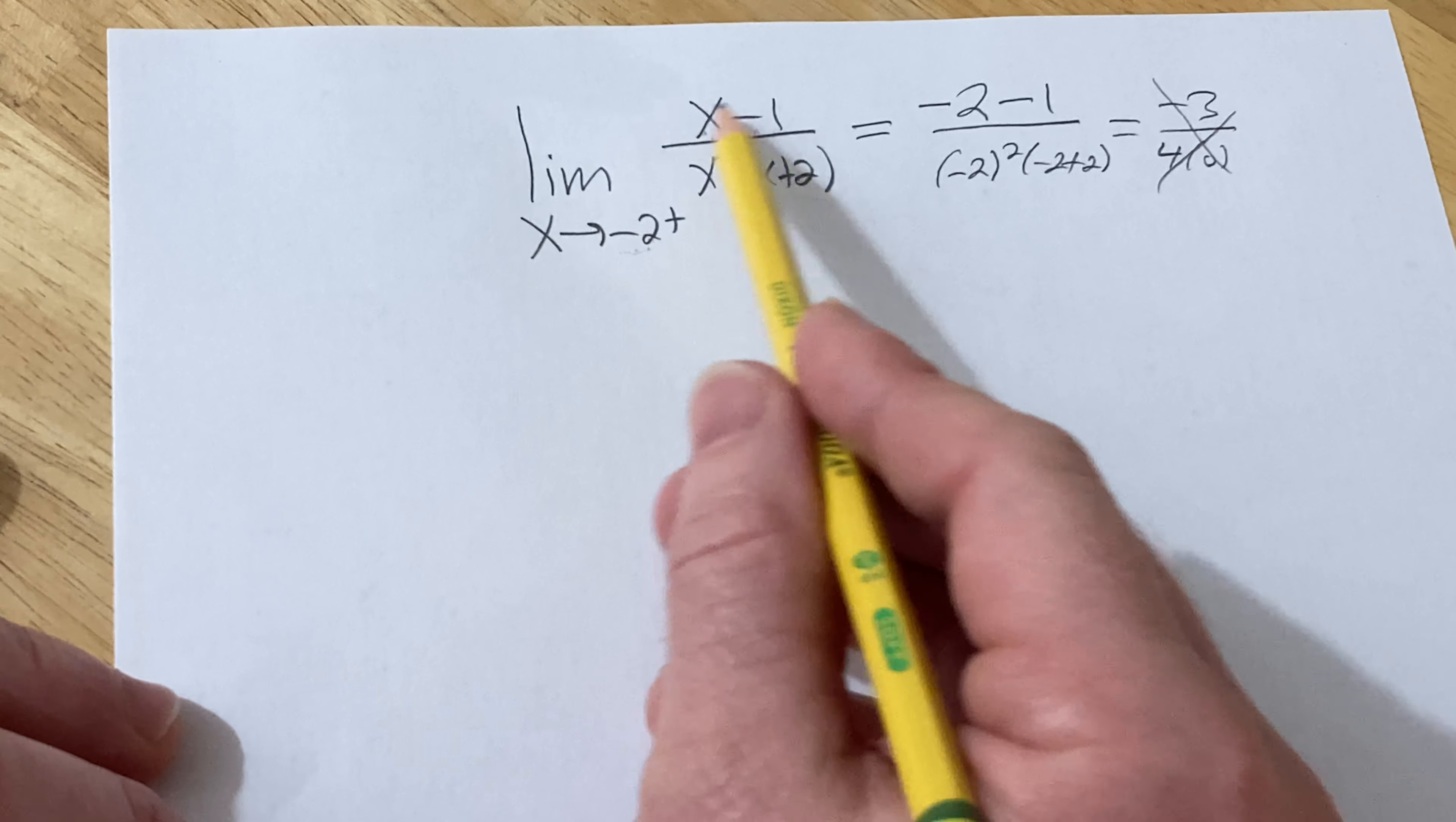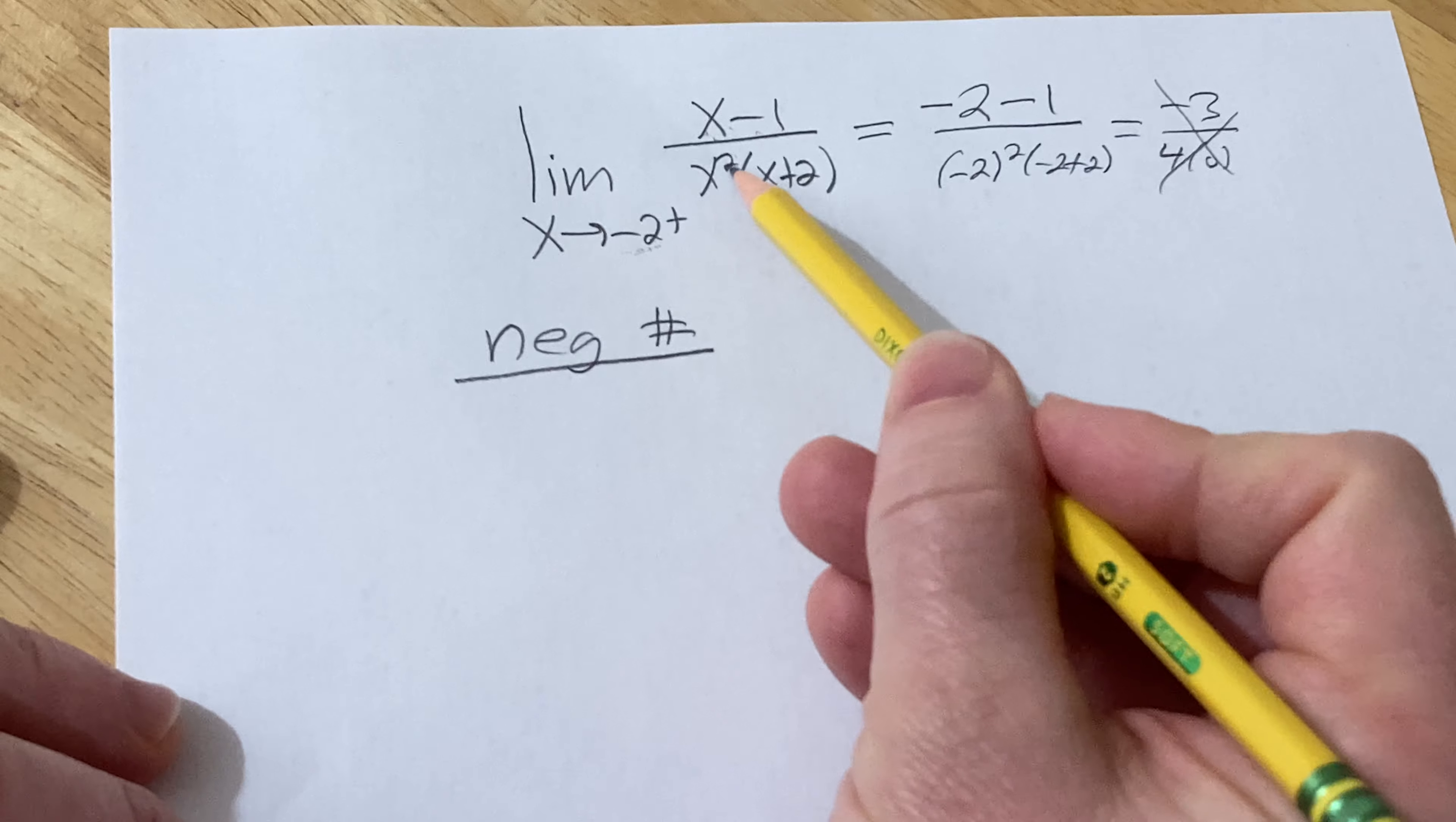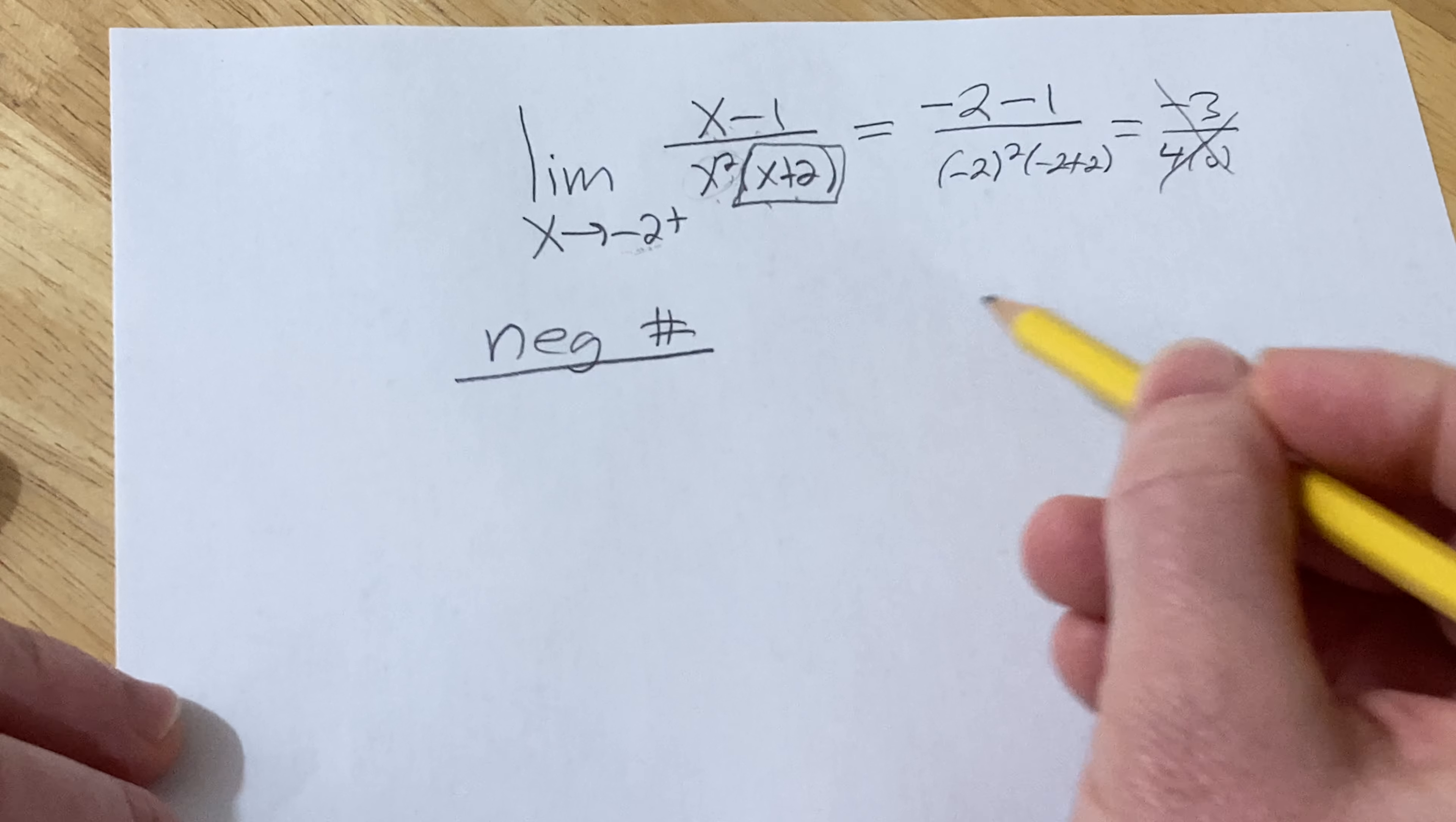In the numerator, you have a negative number. In the denominator, when you're getting close to negative 2 from the right, you're going to be squaring a negative number here, but it's being squared, so this is positive. So really what matters is this. Let's think about this.